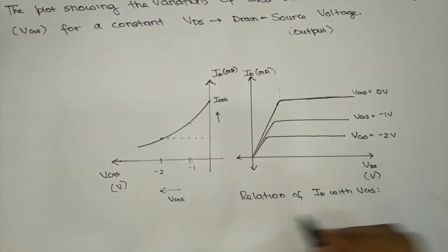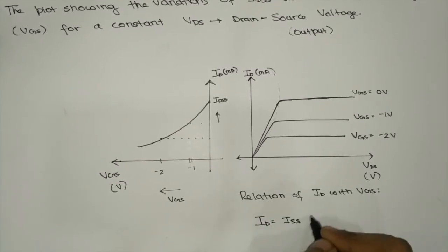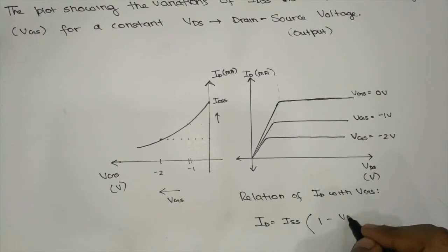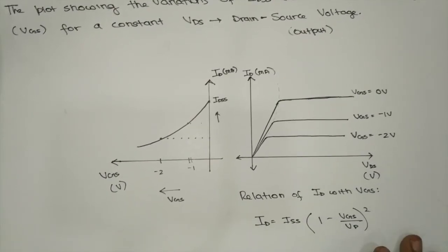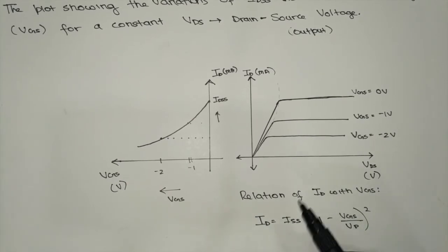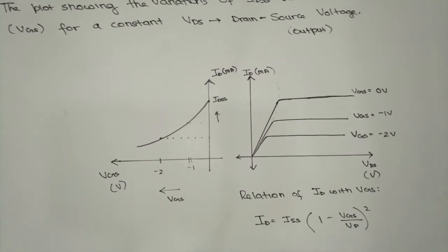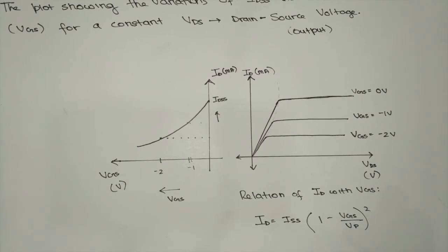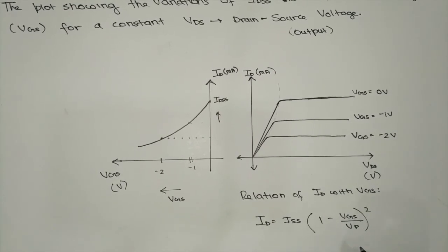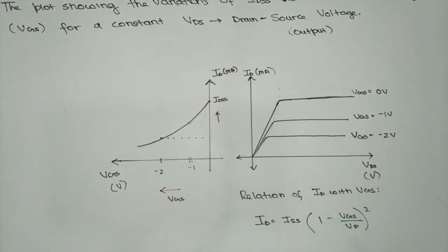The relation of ID with VGS is given by Shockley's equation: ID = IDSS × (1 - VGS/VP)², where VP is the pinch-off voltage. This shows that the drain current is dependent upon VGS squared, and therefore we get a quadratic plot of ID in the transfer characteristics.